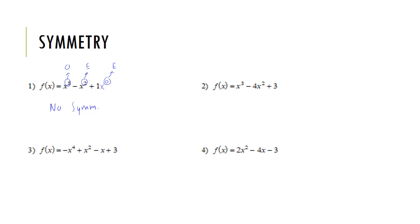For number 2, the exponents are 3, 2, and 0. We have an odd and an even — already a mix — so there is no symmetry. For number 3, the exponents are 4, 2, 1, and 0. That gives us even, even, odd, and even — a mix — so there is no symmetry.